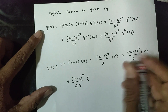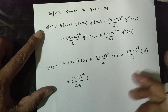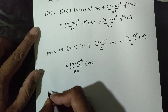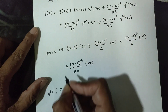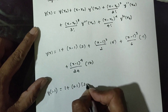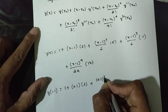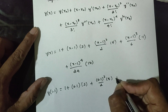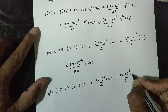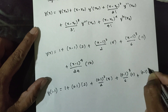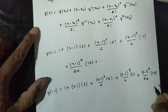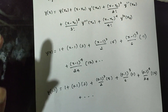For y(1.1): 1 plus (1.1−1)·2 plus (0.1)²/2·5 plus (0.1)³/6·11 plus (0.1)⁴/24·17. This evaluates to the numerical answer for y(1.1).